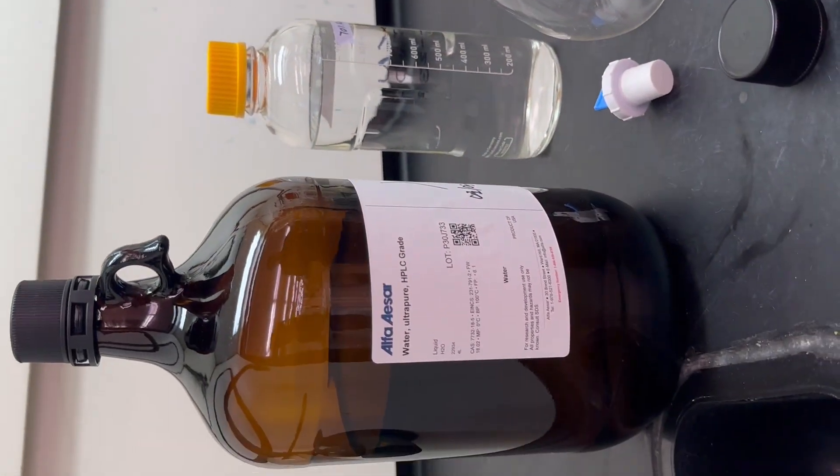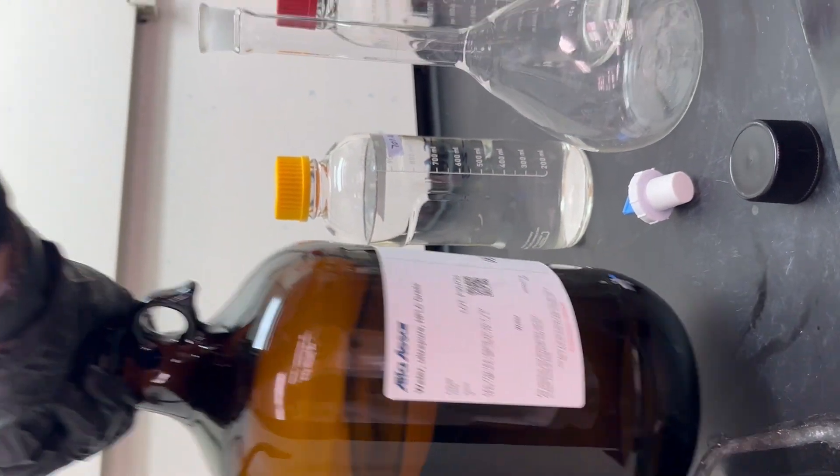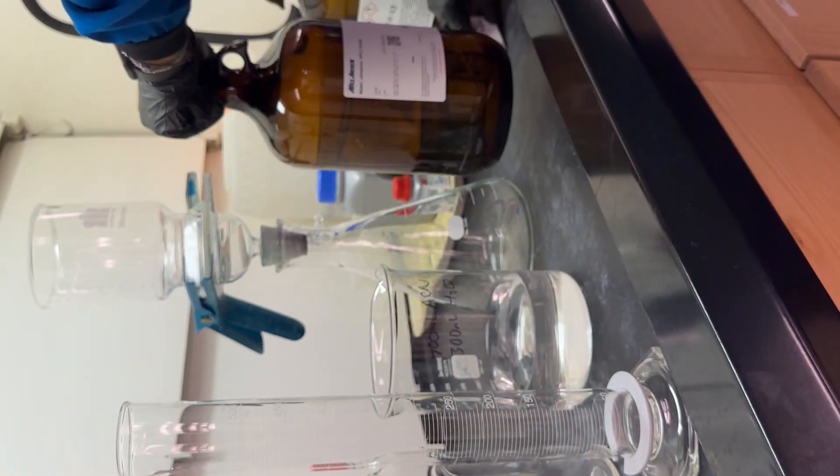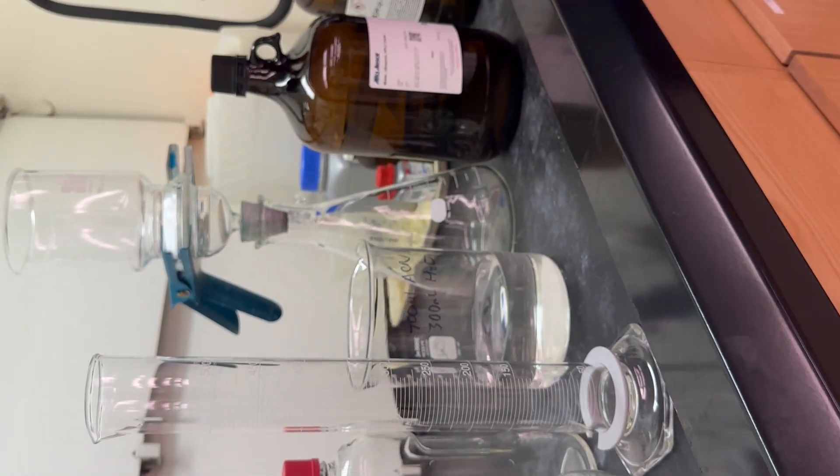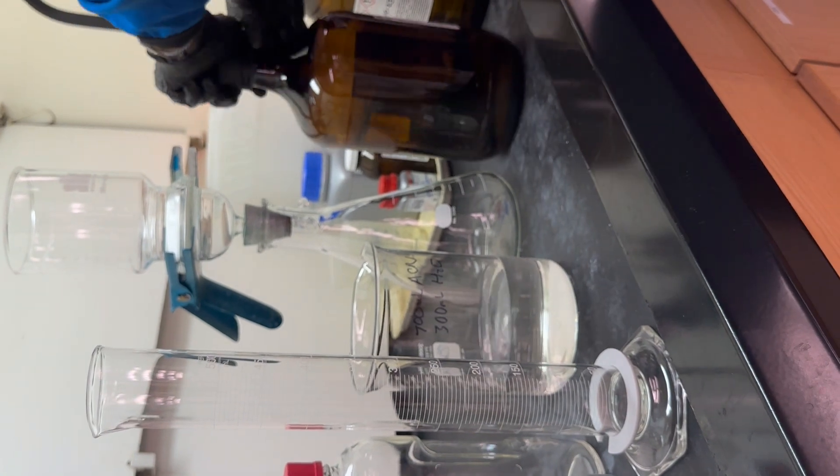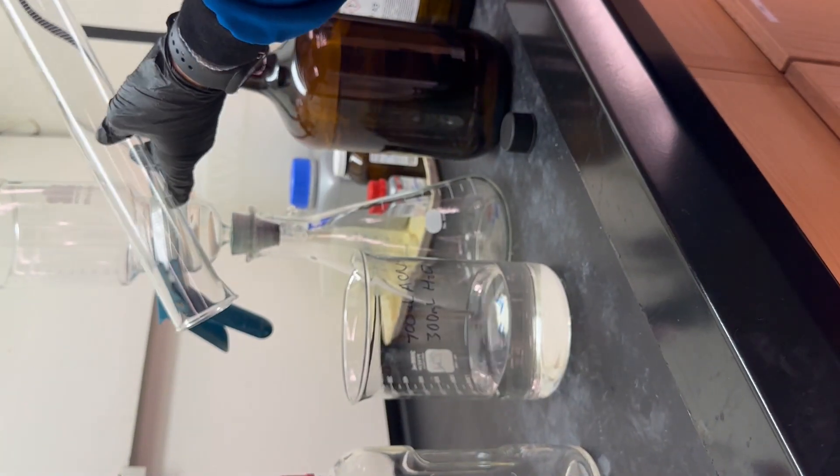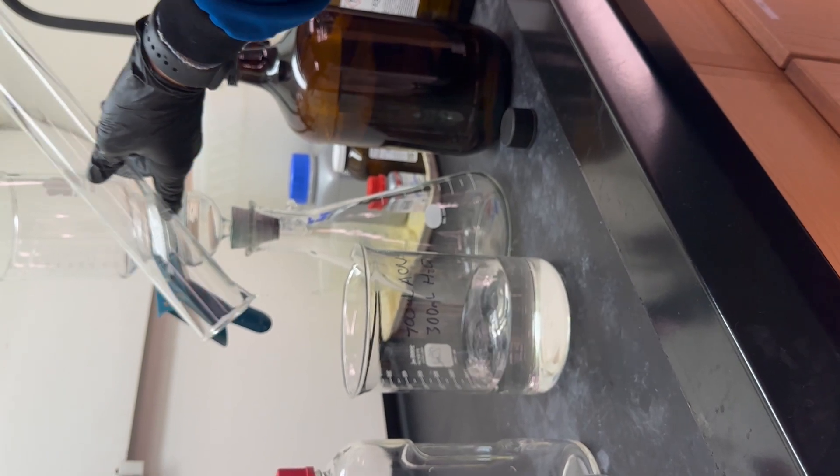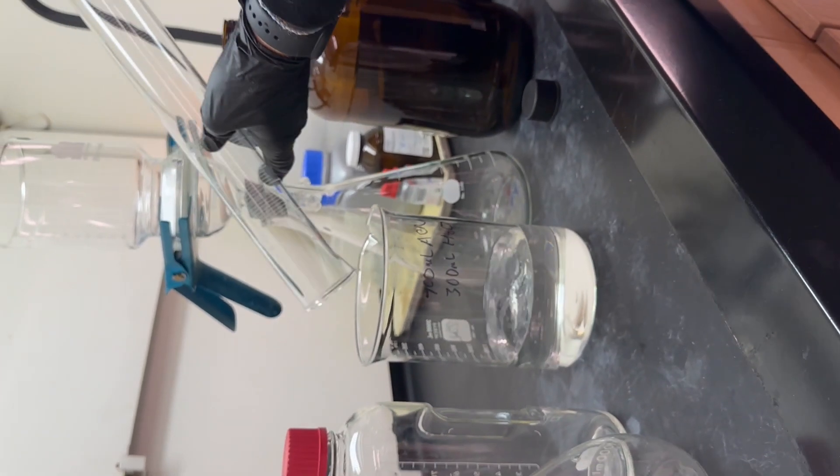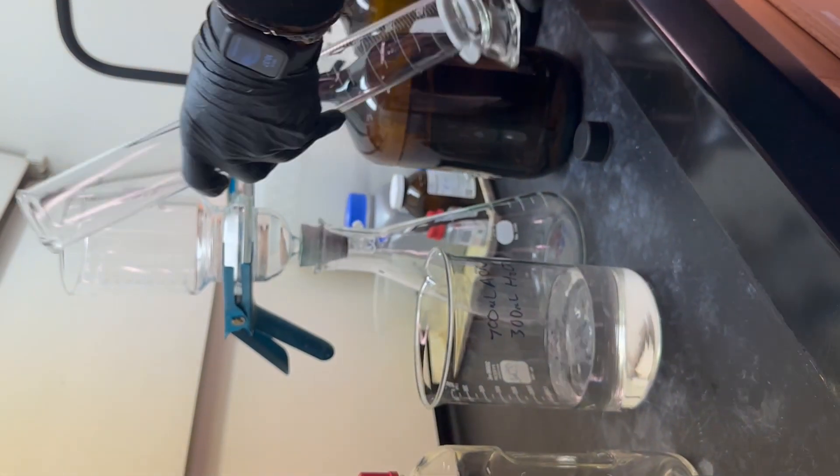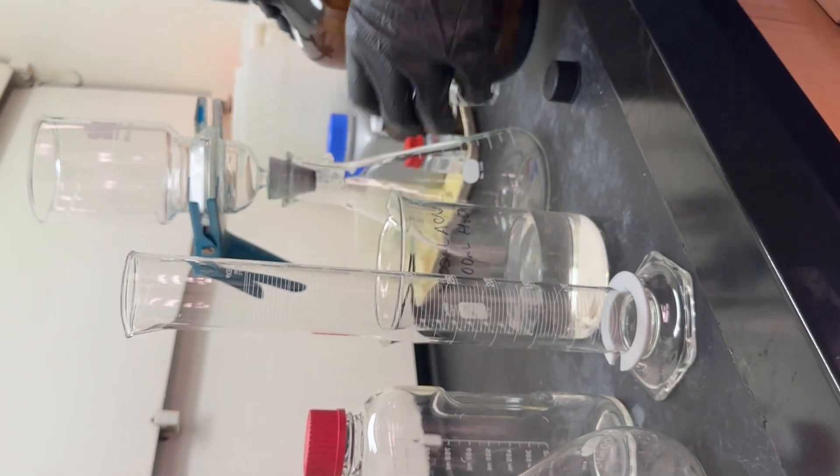Now we can go ahead and get our 300 mLs of our HPLC grade water. Make sure there's no extra volume in here from that ACN. Again, negligible quantities, but try to be perfect. Do what you can do. 300 mLs.